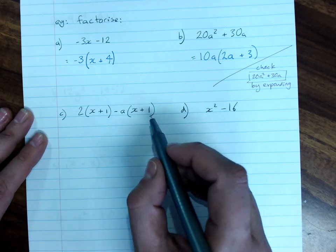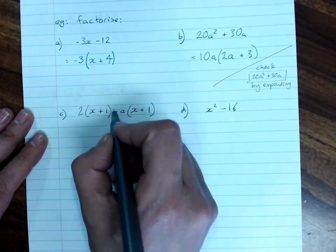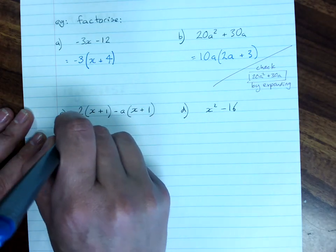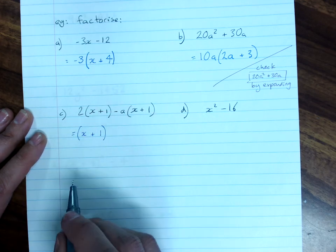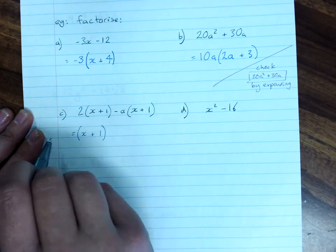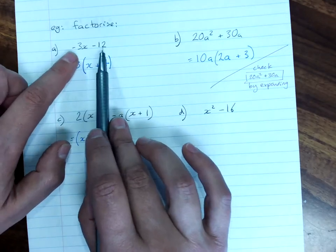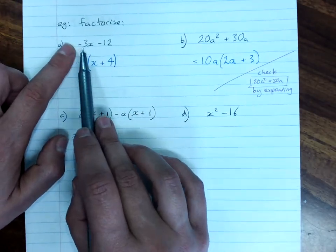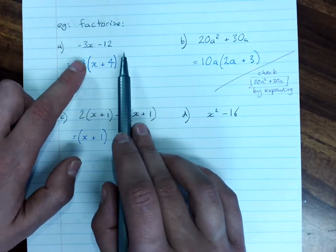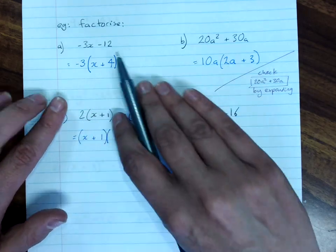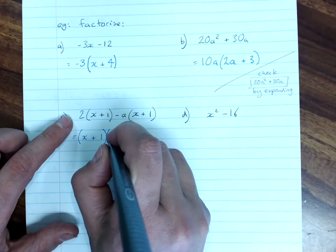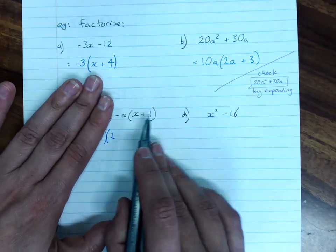So we take our highest common factor out the front, and that just happens to be in brackets. And then in brackets, the remaining factor here is 2. The remaining factor here is negative a.